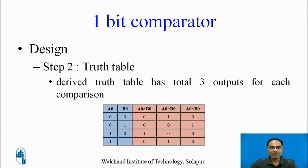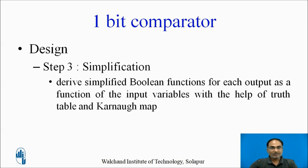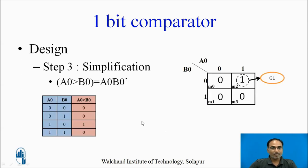Now we have the truth table. Let us go to the third step: simplification. For simplification we use K-maps. We derive the simplified Boolean function for each output as a function of input variables using K-maps and this truth table. For the first output, a0 greater than b0, we require a 2-variable K-map made up of 4 squares. After placing the values, there is no pairing possible since there is only one minterm, so the equation for this group is a0·b0'.